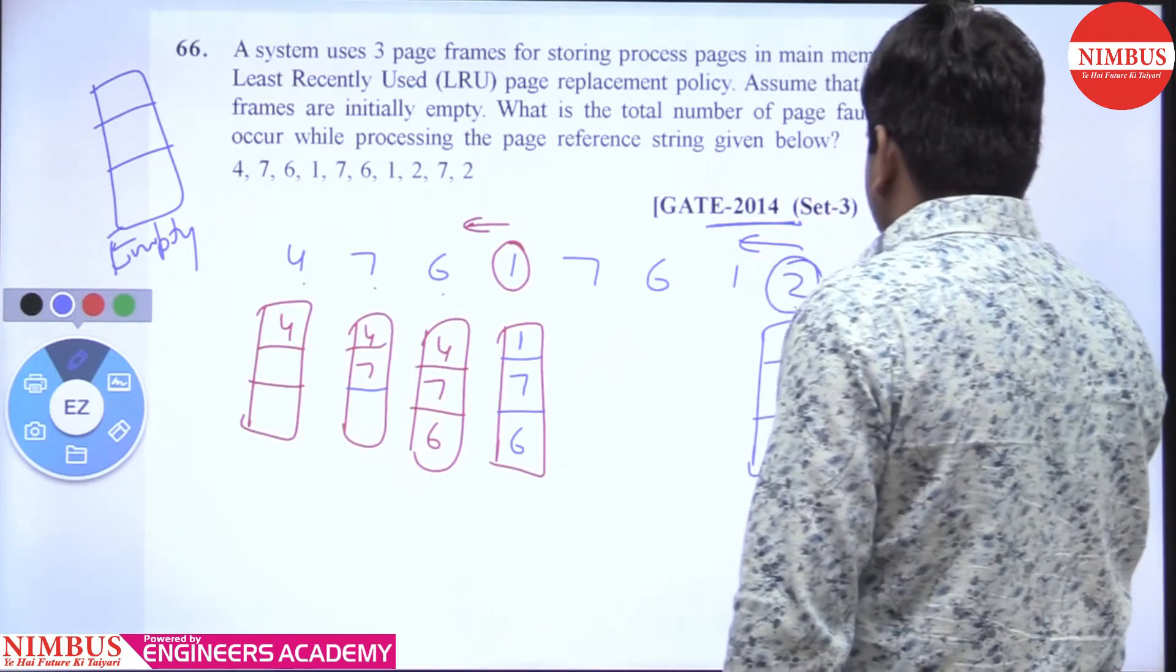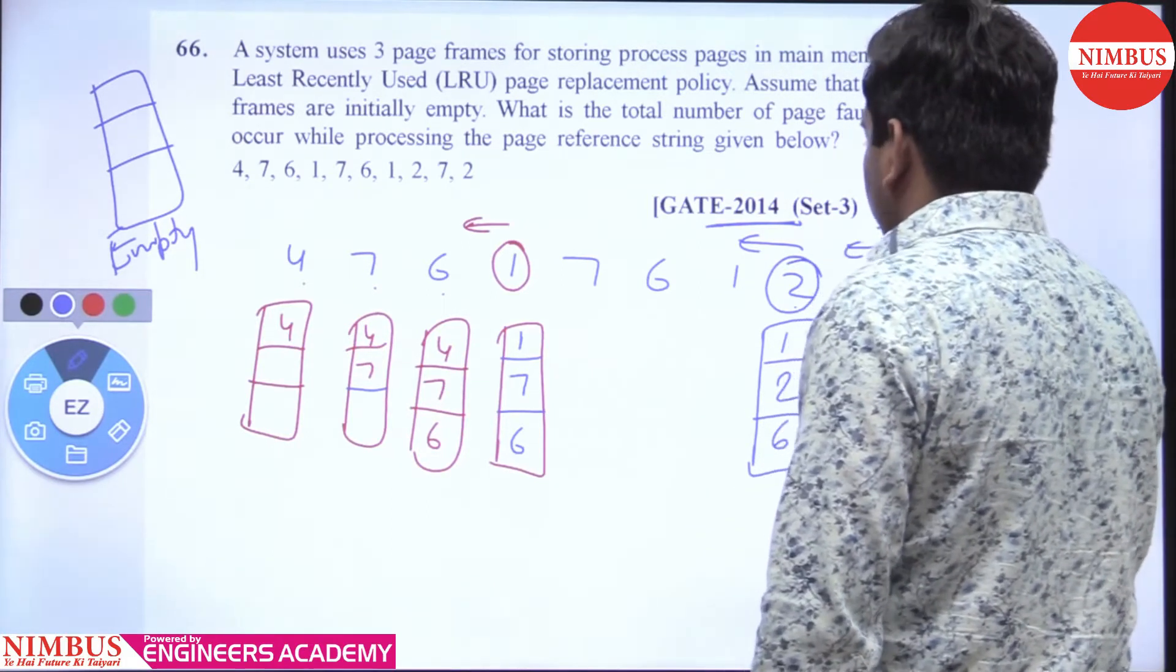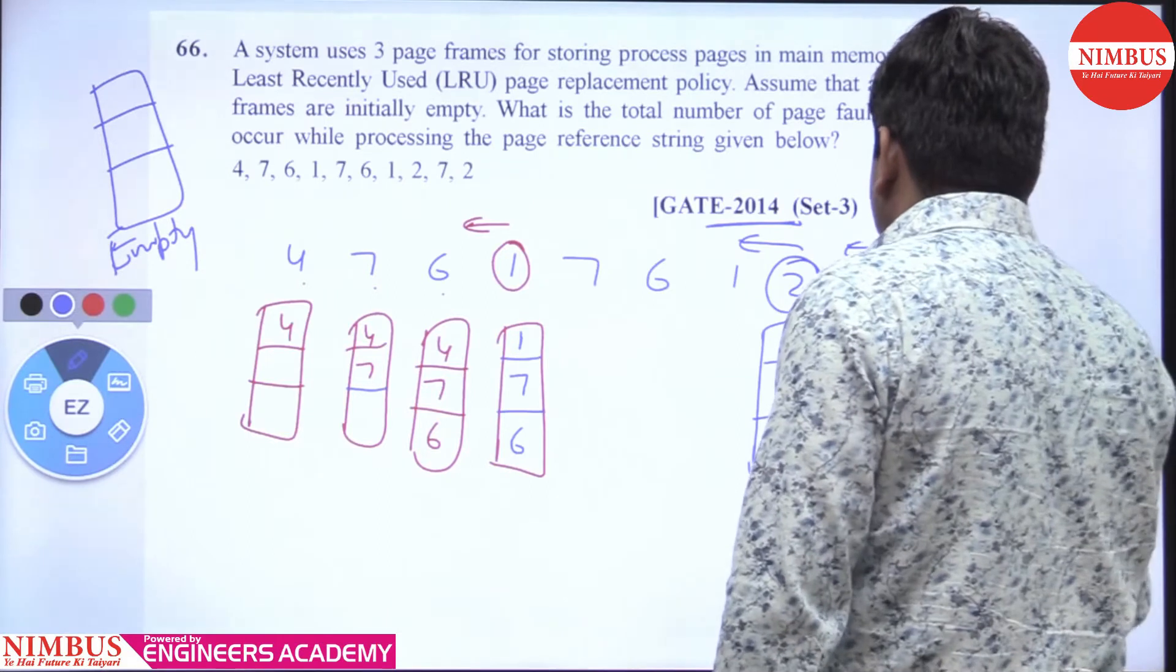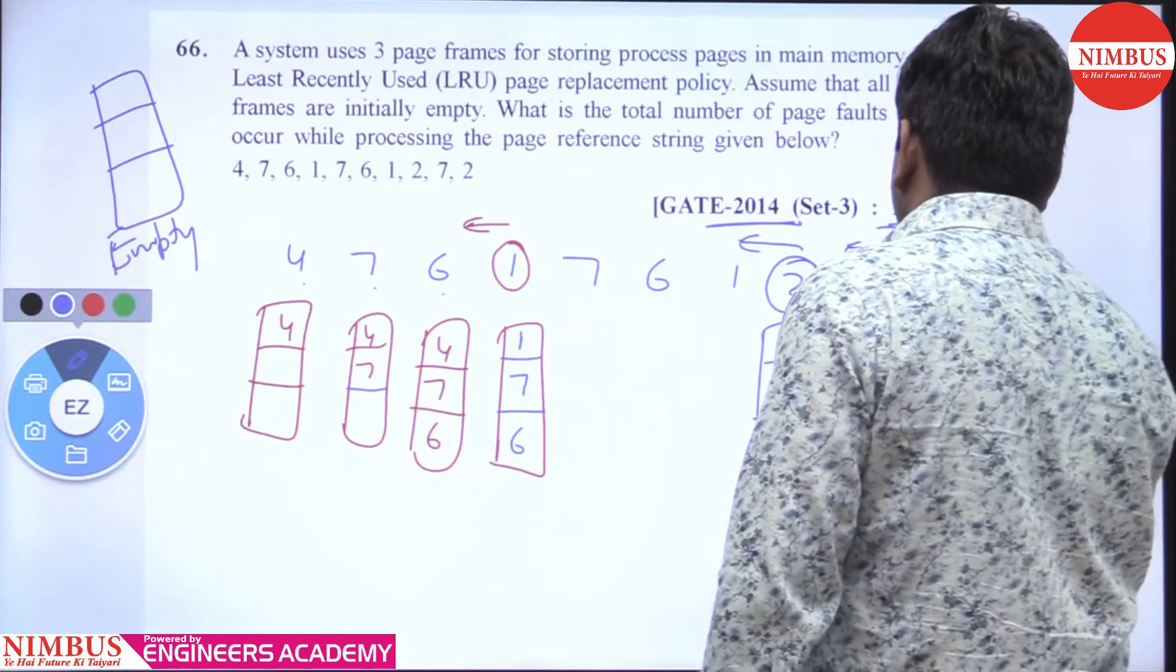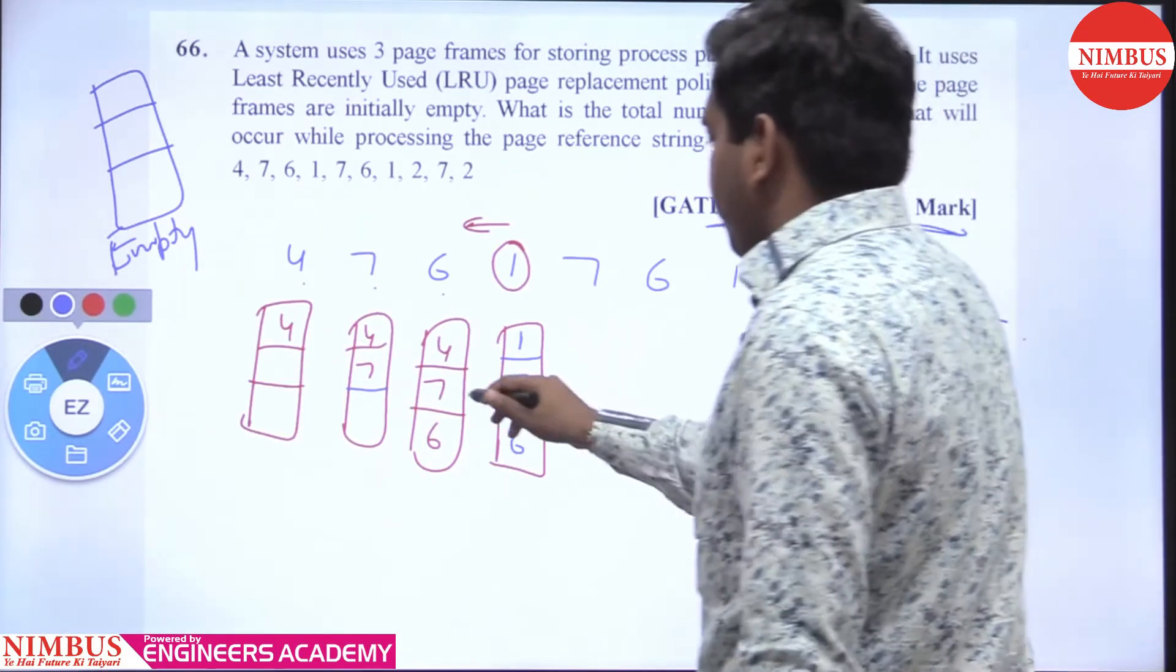7 is not present. We see 1, 2, 6 in reverse. 6 is replaced by 7. 2 is present.